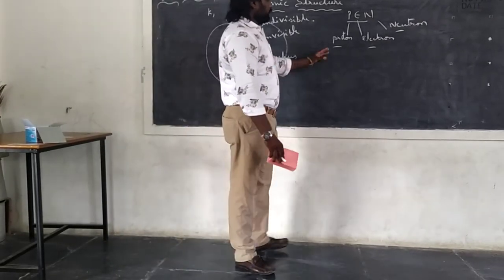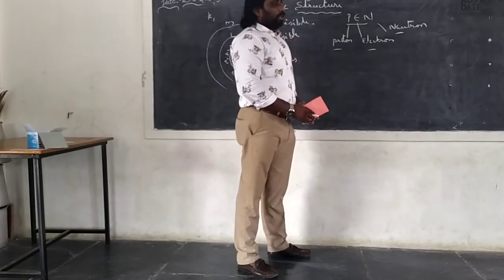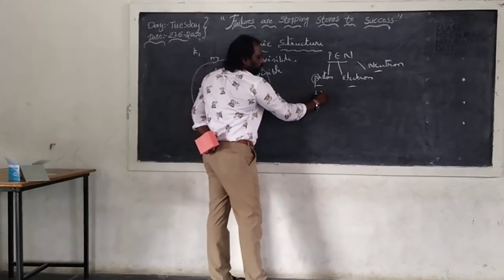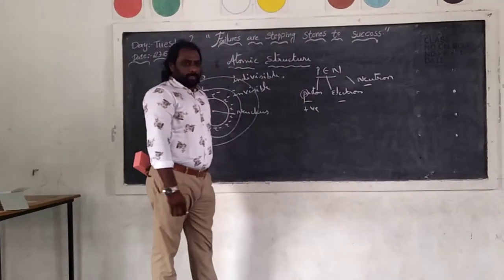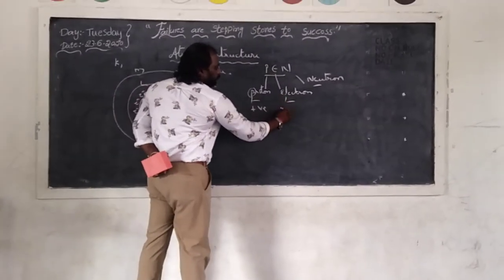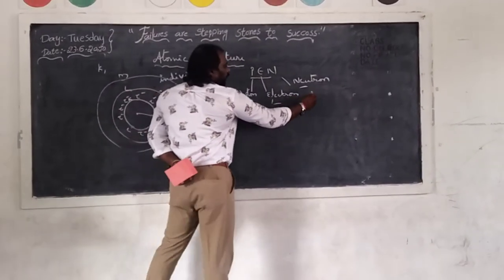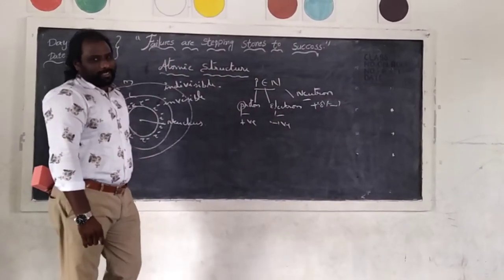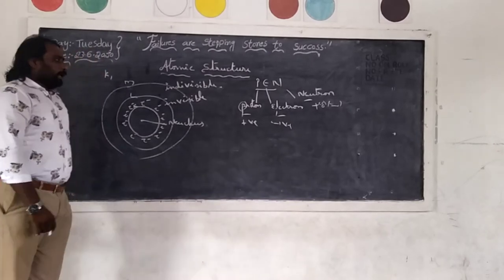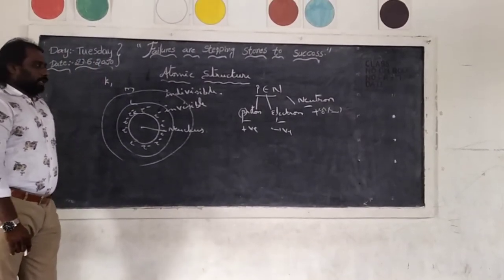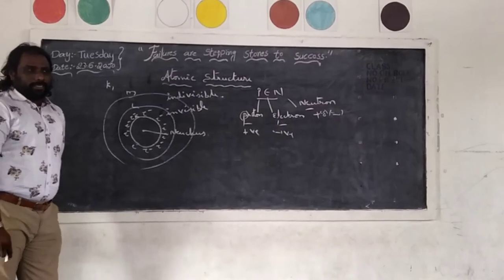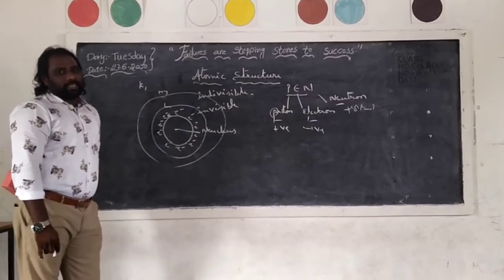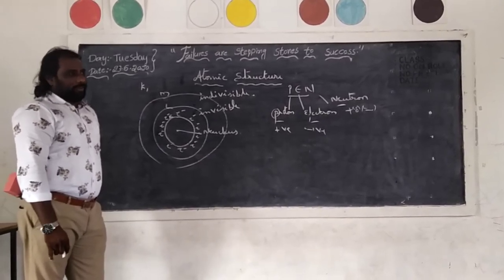So what type of charge these subatomic particles will have? Protons will have positive charge. Electrons will have negative charge. Neutrons is a neutral charge. Protons are invented by Goldstein. Electrons are invented by J.J. Thomson. Neutron was invented by James Chadwick in the year of 1935.